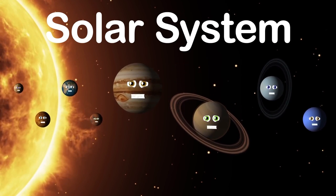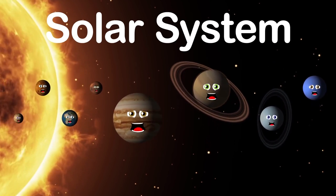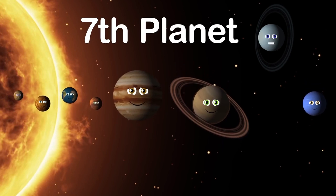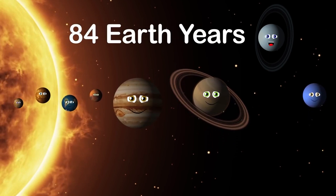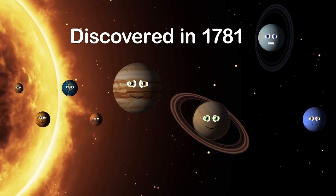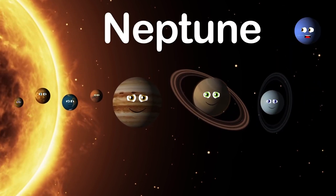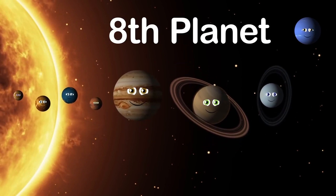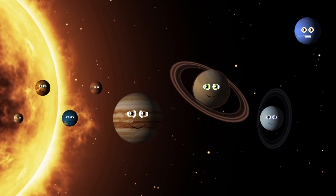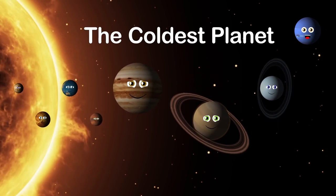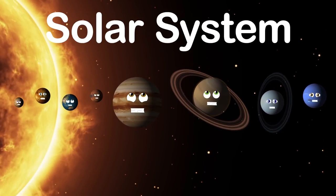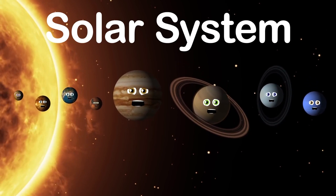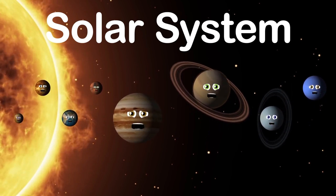My name's Uranus. I am blue in color. I'm the seventh planet from the sun. I orbit the sun once in 84 Earth years. It was discovered in 1781. My name is Neptune, also blue in color. I'm the last gas giant in our solar system.